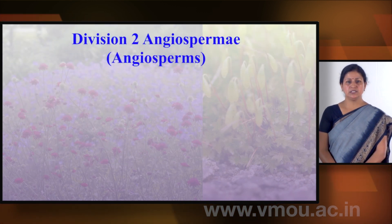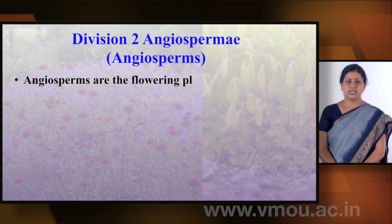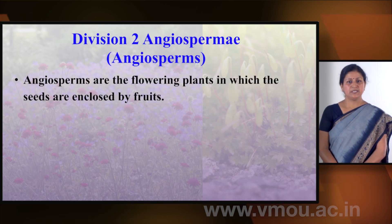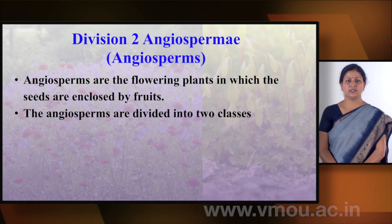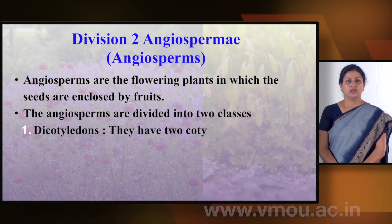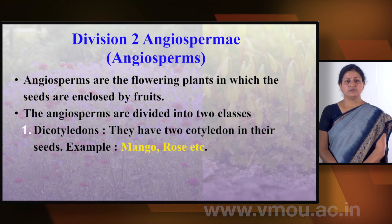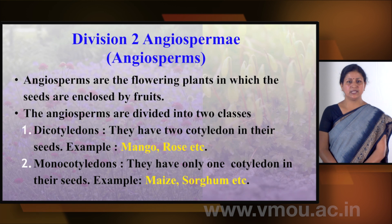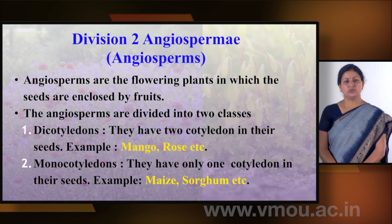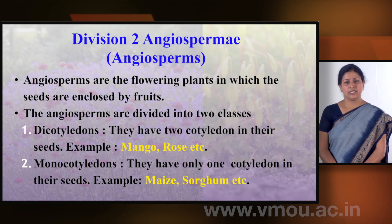The second division is Angiospermy, which is called Angiosperms. These are flowering plants in which the seeds are enclosed within the fruit. They are divided into two classes. The first class is Dicotyledons, which have two cotyledons — examples are mango and rose. The second class is Monocotyledons, which have only one cotyledon — examples are maize and sorghum.